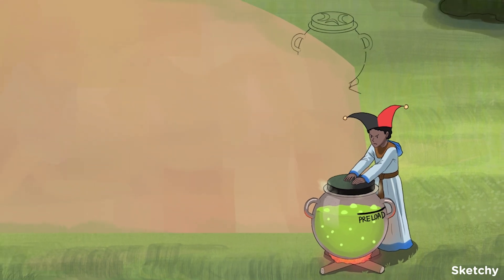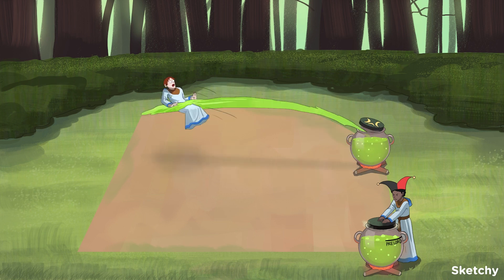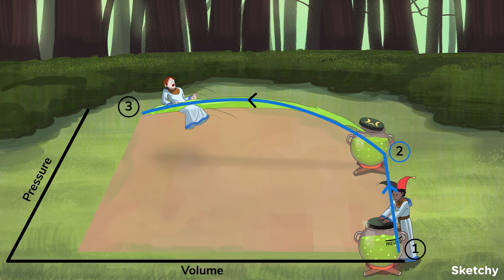The second phase is known as ventricular ejection and begins with the aortic valve opening, which occurs as soon as ventricular pressure exceeds the aortic pressure. With this valve open, blood will be ejected out of the ventricle into the aorta, and the ventricular volume will decrease. This is like how the high pressure in this cauldron has lifted its lid, resulting in potion being ejected across the glade. Notice this lid has three crescent moons on it to remind you that we are talking about the aortic valve — a semilunar valve made up of three half-moon leaflets. On the loop, you will see this illustrated by a curved line moving up and to the left, with increasing pressure from contraction and decreasing volume from ejection.